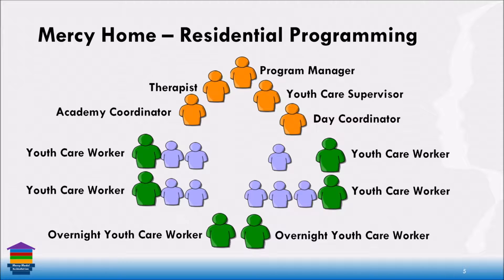Each home has a certain number of youth care workers depending on the number of kids in the program — our ratio is one to four or five. We have overnight youth care workers in all of the homes. We've really seen that the need for kids, especially ages 18 to 24, is becoming more intense. So we've tried to adjust our staffing structure to respond to that.